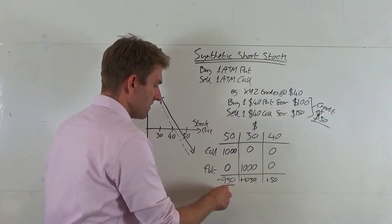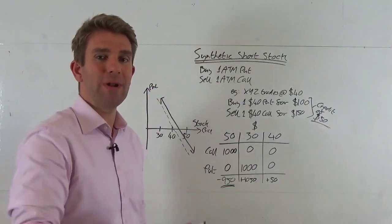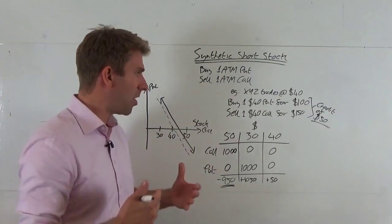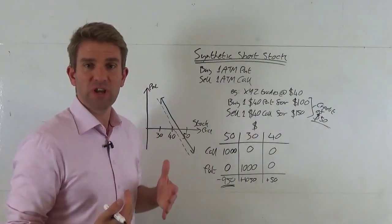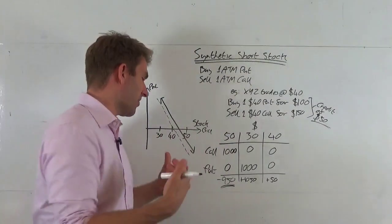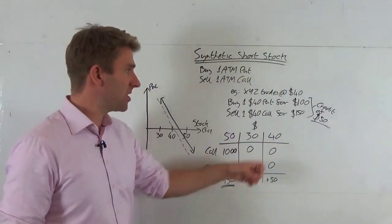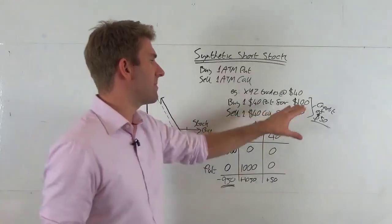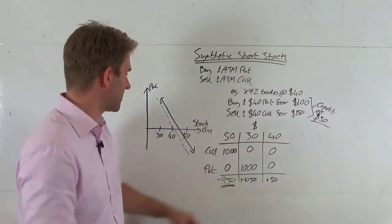What would our total loss be if we were net short the actual stock? We'd be down $10 on 100 shares, so down $1000. We're only down a little bit less because of that net credit. However, if the call was the same price as the put at $100, it would be exactly the same.